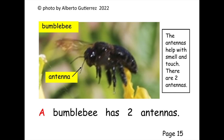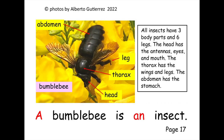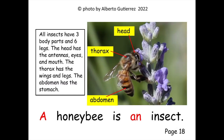A bumblebee has two antennas. A honeybee has two antennas. A bumblebee is an insect. A honeybee is an insect.